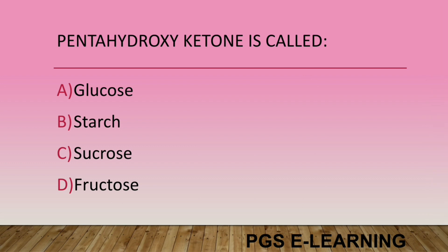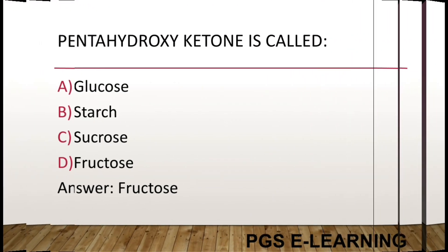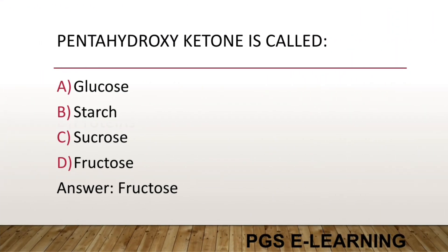Pentahydroxy ketone is called: Option A, glucose. Option B, starch. Option C, sucrose. Option D, fructose. Correct answer is fructose.